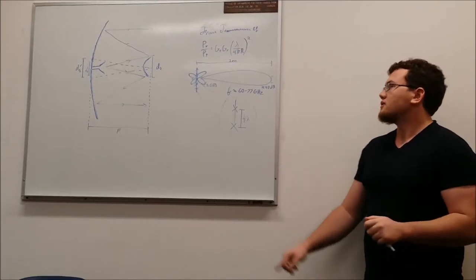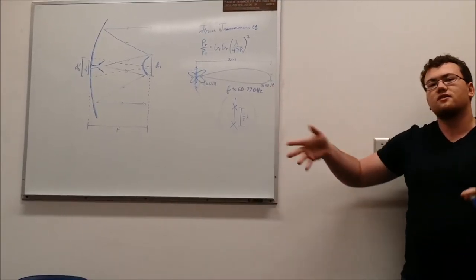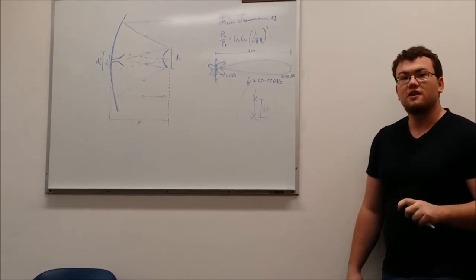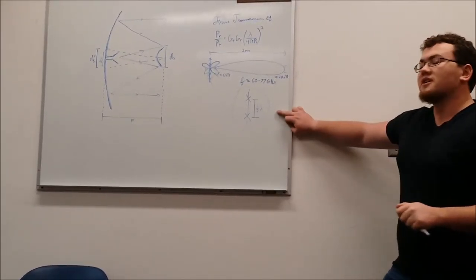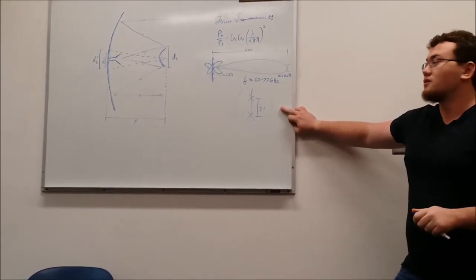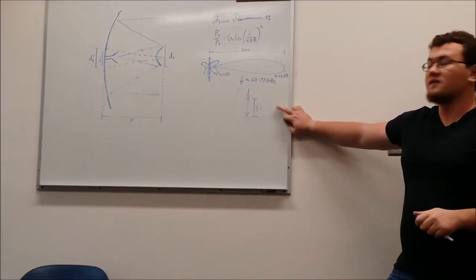When we started talking to Dr. Averly, he was looking at the 60 to 77 gigahertz range for our frequency. The optimal spacing for one of these is half wavelength. So at that kind of frequency, this wavelength, this spacing is going to be tiny.